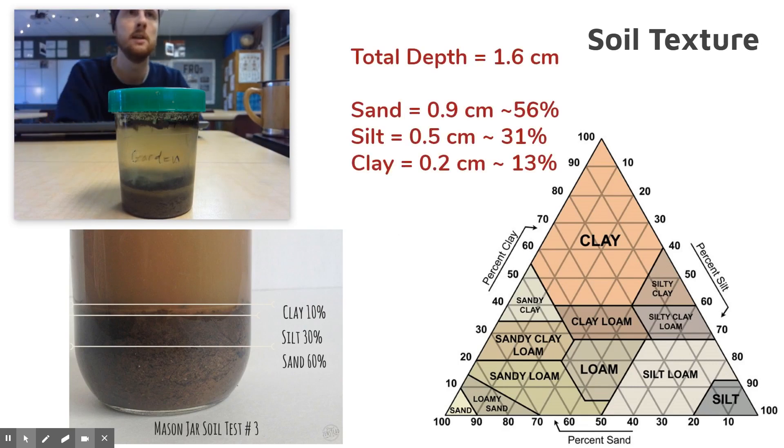Hold up a ruler here next to your sample and get down really low at eye level so you can see the different layers and measure them out. You're going to have your sand on the bottom and then your silt and your clay. We ended up with about 56% sand, 31% silt, and about 13% clay.